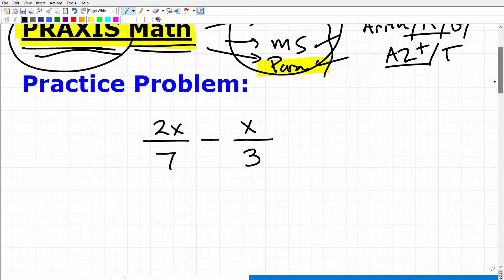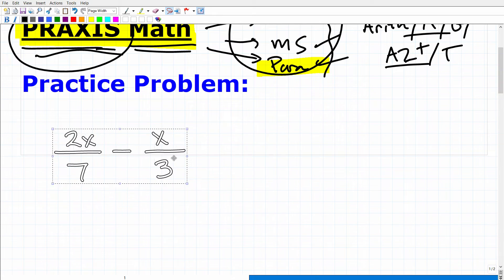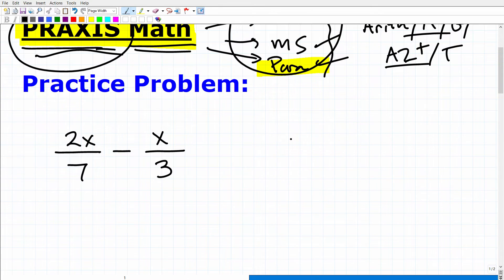So 2x over 7 minus x over 3 seems like a pretty basic algebra problem. So maybe you want to pause the video and see if you can do it real quick. But before I answer this question, let's just see how well you do with fractions. So let me scoot this over here for a second. And let's have you do this problem: 2 sevenths minus 1 third.